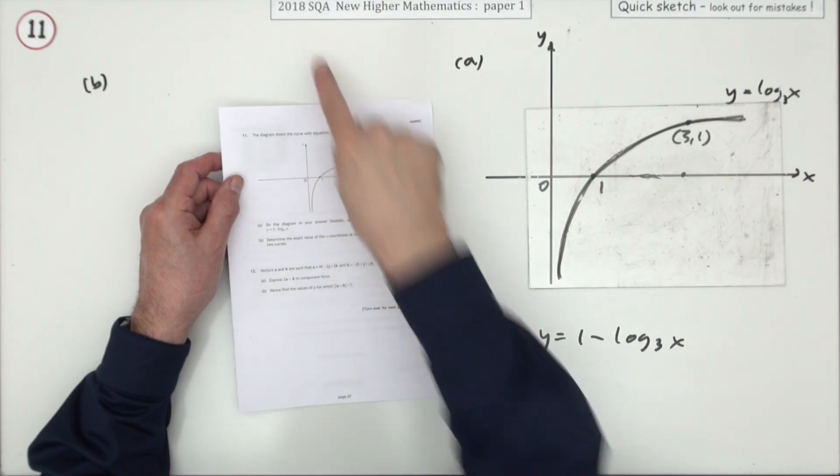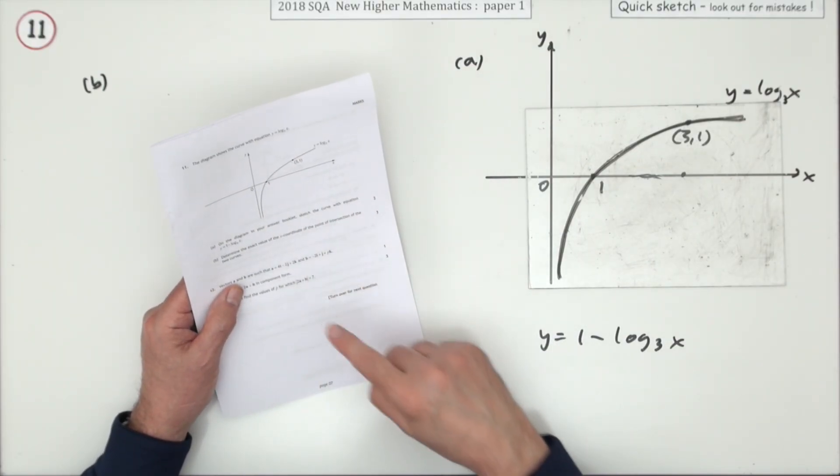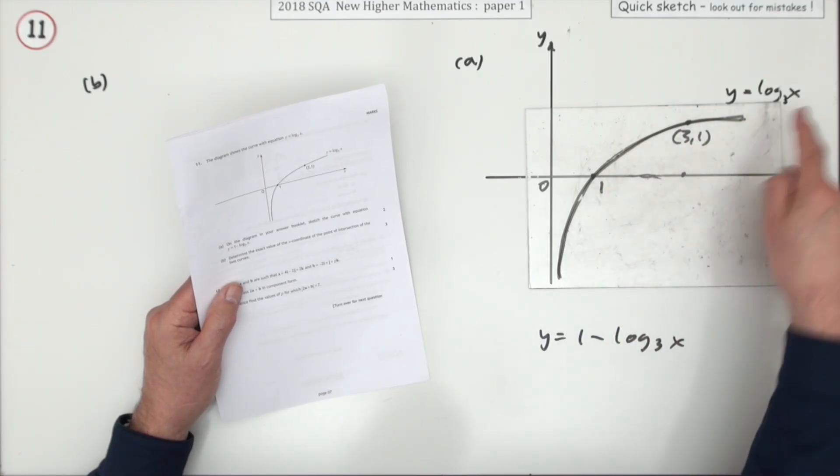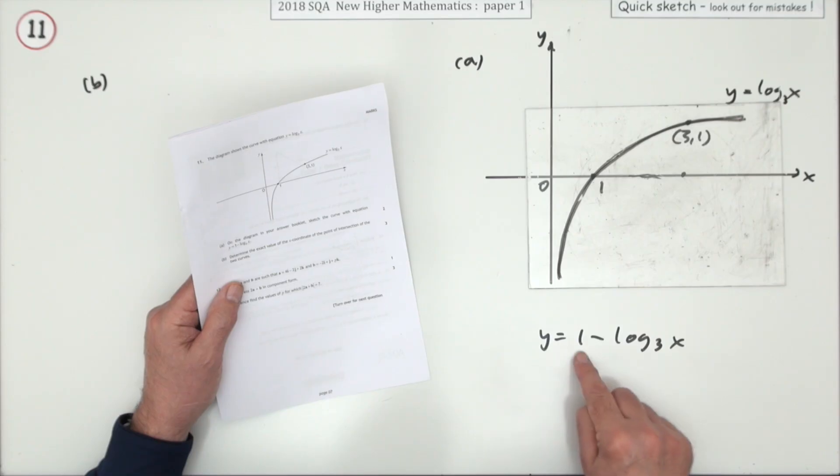Number 11 from paper 1 of the 2018 higher maths, up to 5 marks for transforming a function. You're given the graph of y equals log₃x and you've to sketch for 2 marks the graph of 1 minus log₃x.